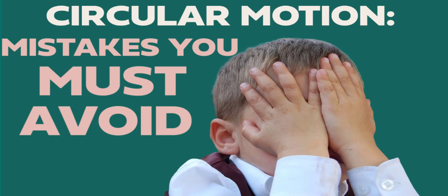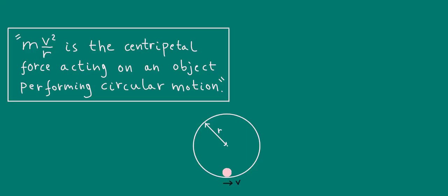we're going to discuss the biggest mistakes that students make in uniform circular motion. Uniform circular motion means circular motion at a constant speed. If you think that mv squared over r is the centripetal force acting on an object performing circular motion,